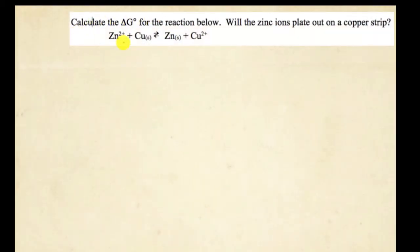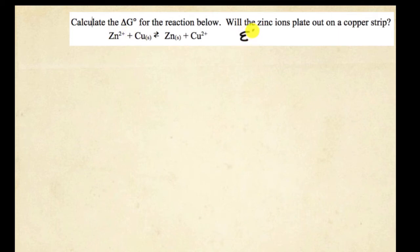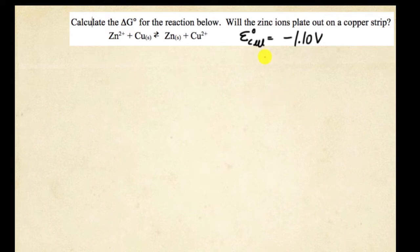So here's the example. We've got this reaction of zinc ions reacting with copper to produce zinc solid and copper 2 plus ions. I'm going to calculate the free energy for the reaction below. I'm assuming that you've already calculated this for the overall cell — I did that in a previous lesson — so the cell potential comes out to be negative 1.01 volts.